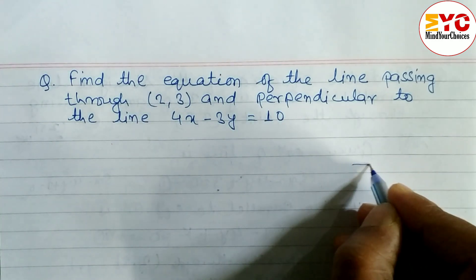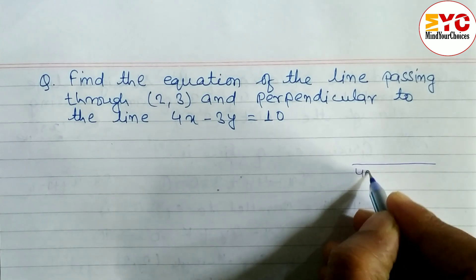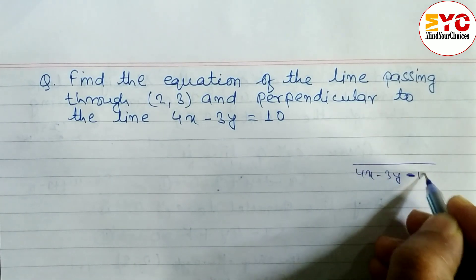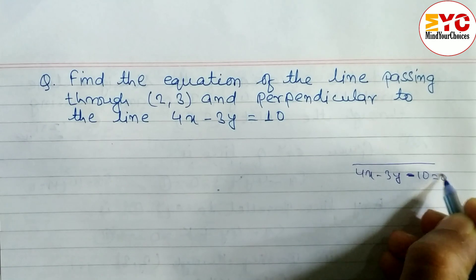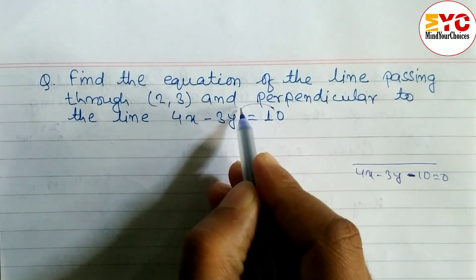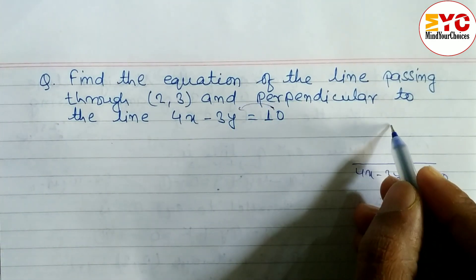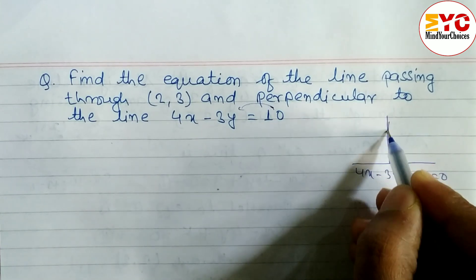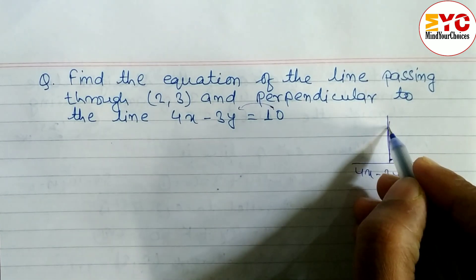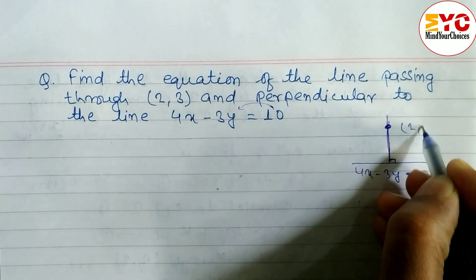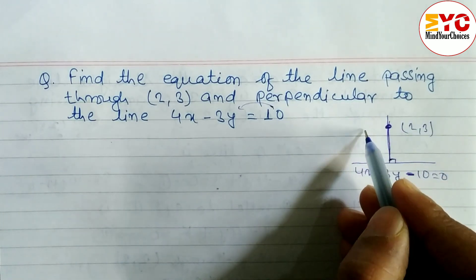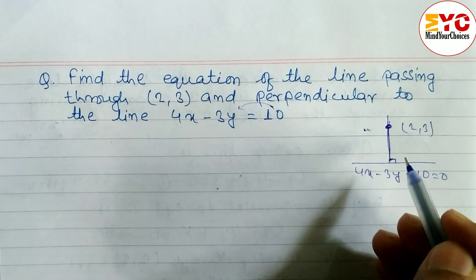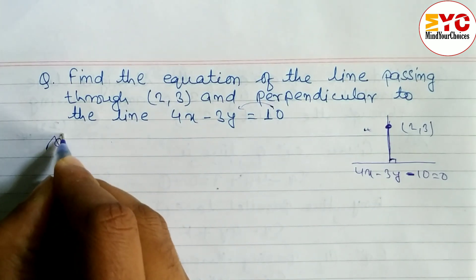I will show you in a diagram. One line we have to draw here: 4x minus 3y is equal to 10, or 4x minus 3y minus 10 is equal to zero. We have to find the equation of a straight line which is perpendicular to this line and passing through (2, 3).